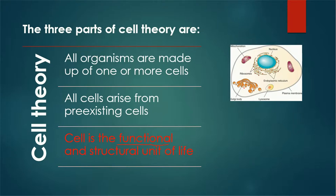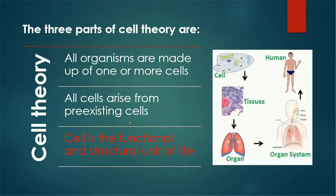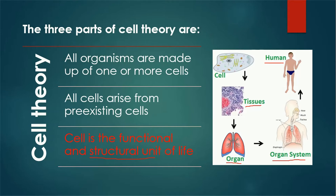All these functions are performed by the cell, which is why we say cell is a functional unit. Now, regarding the structural unit: cells combine to form tissues, different types of tissues combine to form organs, organs combine to form organ systems, and organ systems combine to form an organism such as a human. It is just like bricks combined to form walls, walls combined to form rooms, and rooms combined to form a complete house. That was all about the three main parts of the cell theory, proposed by Schleiden and Schwann in 1839.